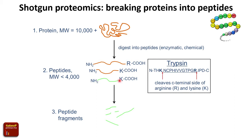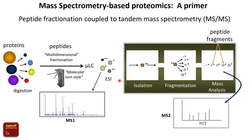We break proteins into peptides and then build them back up to determine proteins. The general approach is to take a mixture of proteins from any given source, digest these into peptides using trypsin, take those peptides and fractionate them using liquid chromatography — which acts as a molecular turnstile. Similar to taking a crowd through a turnstile at a large event, chromatography simplifies the mixture, separating out peptides so they get introduced through electrospray ionization into a mass spectrometer, which puts a charge on the peptides and puts them in the gas phase.